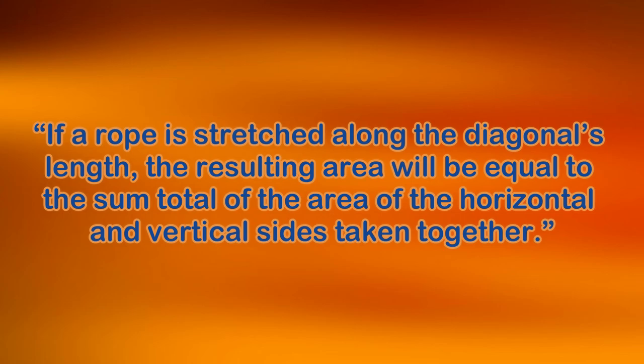This simple sloka translates to: if a rope is stretched along the diagonal length, the resulting area will be equal to the sum total of the area of the horizontal and vertical sides taken together. This verse in the Baudhayana Sulba Sutra logically describes the size of a rectangle, or even a square, as we calculated earlier.